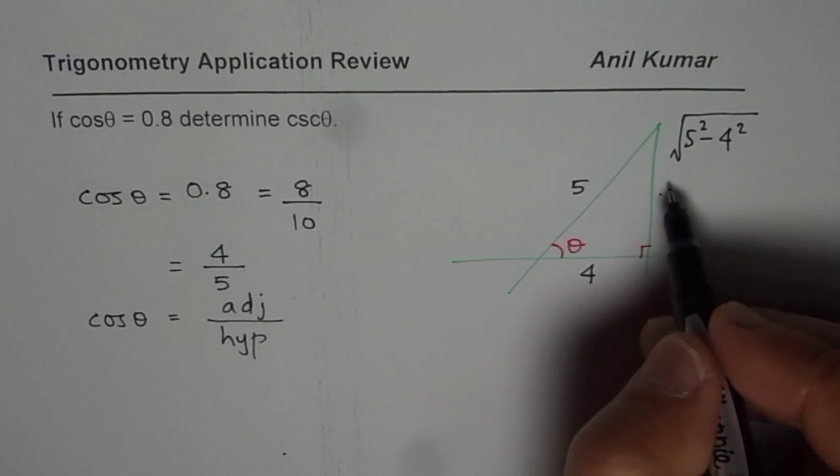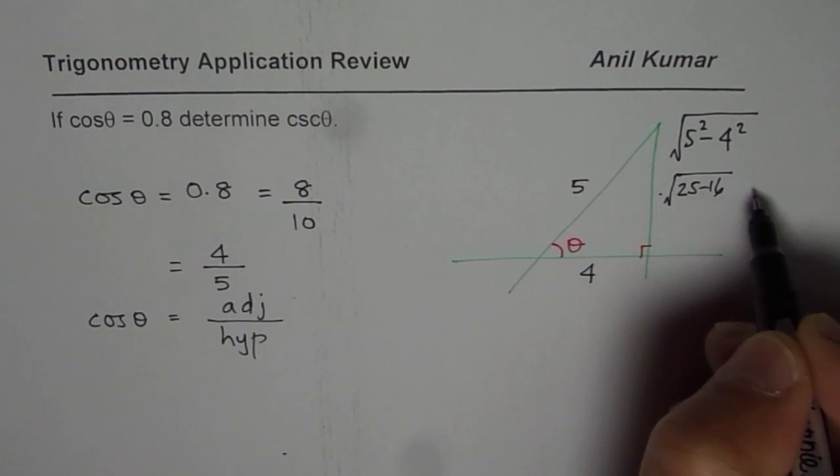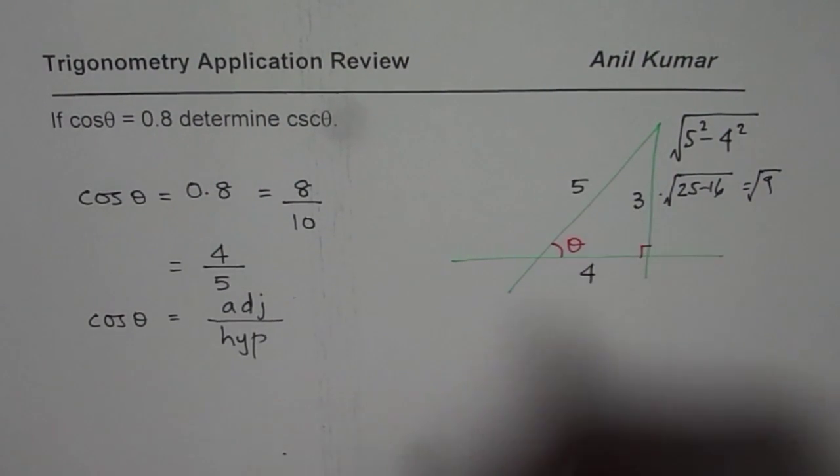So now, it is equal to square root of 25 minus 16, which you know is 9, and square root of 9 is 3. So we get this side as 3.